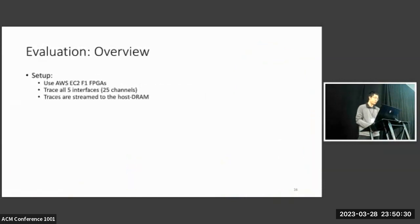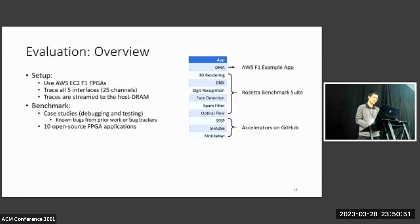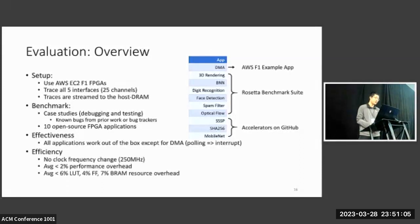For evaluation, we use FPGAs from the Amazon F1 platform. We configure Vidi to trace all five interfaces. And the traces are streamed out of the FPGA to the host DRAM. For benchmarks, we have two case studies where we select known bugs from prior work or bug trackers. And we also have 10 open-source FPGA applications as shown on the right. For effectiveness, we find that all applications work out of the box except for one. The DME application, we need to make a 10-line patch to convert the polling behavior to interrupt. And for efficiency, Vidi does not slow down the application clock frequencies and incurs low performance overhead, about 2% on average, and single-digit percent resource overhead of different FPGA resources.